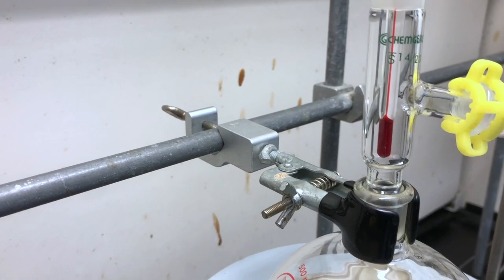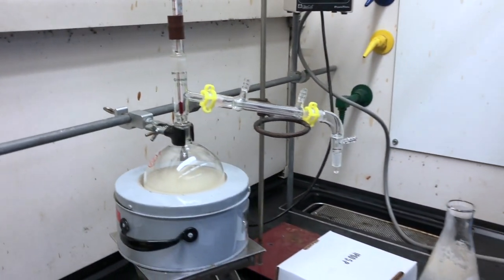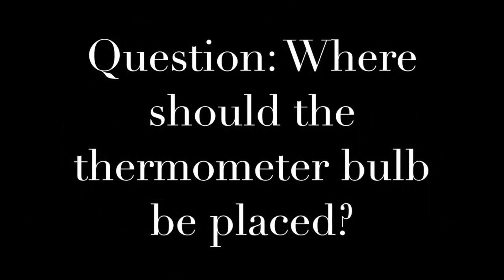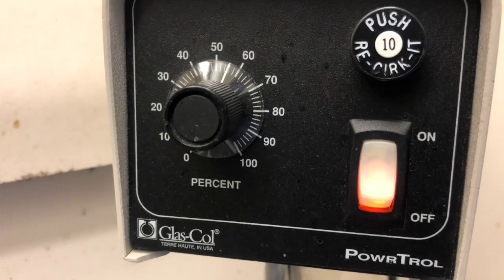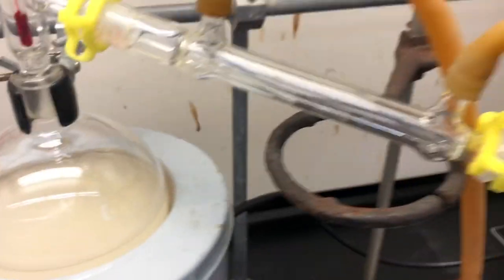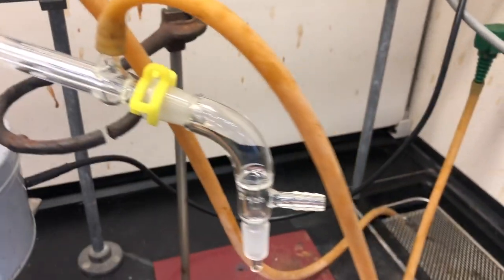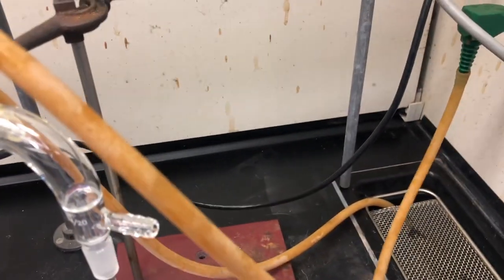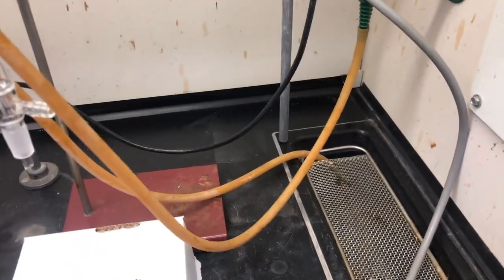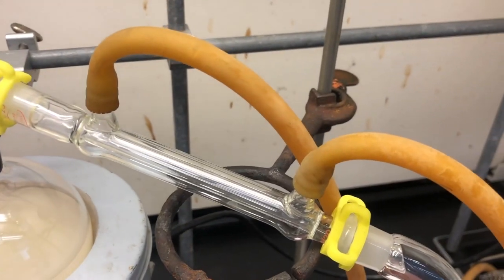We then place the thermometer so that it will read the temperature of the vapors that are entering the condenser. We begin heating at a fairly high rate, around 50 to 60 percent. We also attached our water hoses, the lower one going to the water inlet, and the upper one going to the drain in the sink. You can see the iron ring supporting the condenser.